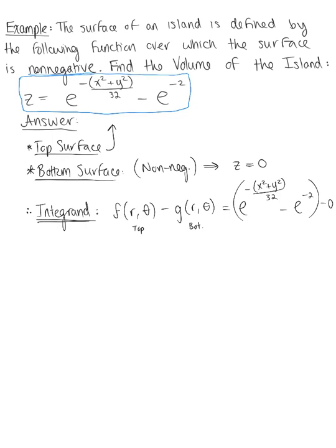Before we box up our answer, notice that we have Cartesian coordinates, so we know we're integrating in polar coordinates. We can rewrite this as the natural exponential raised to negative r squared divided by 32, minus the natural exponential raised to negative 2. So this is our integrand.